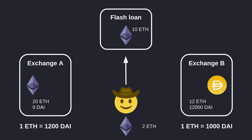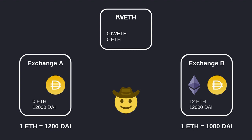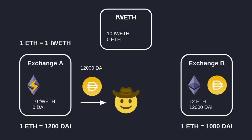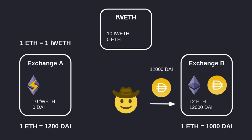Now let's replace the flash loan with flash mint and see how arbitrage works. Here, instead of a flash loan contract, we have a flash mintable token. Notice there is 0 fWETH and 0 ETH inside this contract. On Exchange A there is 0 ETH, however this exchange also accepts fWETH — one fWETH trades for one ETH. First, I flash mint fWETH, send it over to Exchange A, and get back DAI in return. Even though the exchange had 0 ETH, because it accepts fWETH we were able to exchange fWETH for DAI.